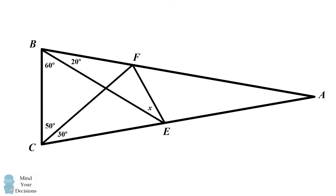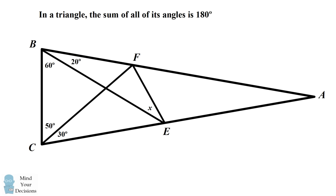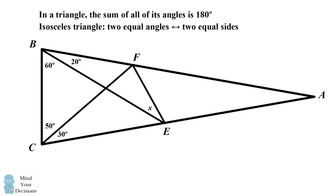There are two main principles we'll use to solve this problem. The first is that in a triangle, the sum of all of its angles is equal to 180 degrees. If we know two of the three angles, we can solve for the third. The second principle is that in an isosceles triangle, two equal angles are opposite two equal sides, and vice versa — if two sides are equal, the angles opposite those sides are equal to each other.